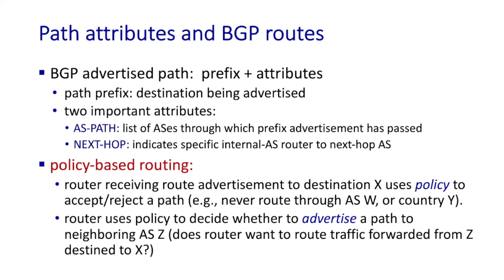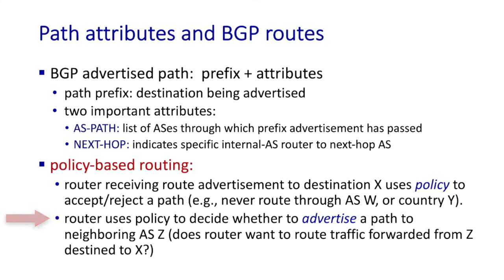We've said that BGP is a policy-based routing protocol, and now we can see exactly what that means. A router receiving a route advertisement uses policy to decide whether or not to use a path that's just been advertised. For example, a policy might be never to accept a path that passes through ISP W or through country Y. A router also uses policy to decide whether or not to advertise a particular path to a neighboring autonomous system. If I don't advertise a path to a neighbor, that neighbor can never send me traffic that uses that path — and maybe that's exactly what I want.